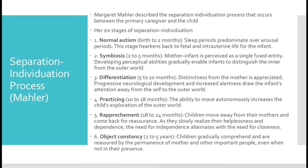The first stage is called normal autism, going from birth to approximately two months. This is where sleep periods predominate — the infant is not awake very much, or at least not awake or aroused for very long periods of time. This stage actually resembles fetal or intrauterine life for the infant.